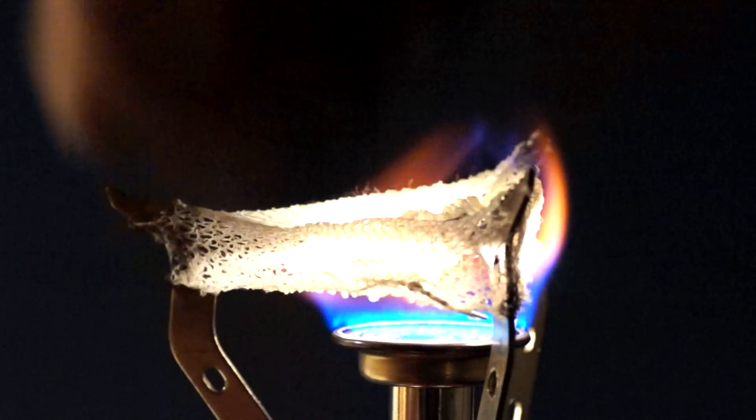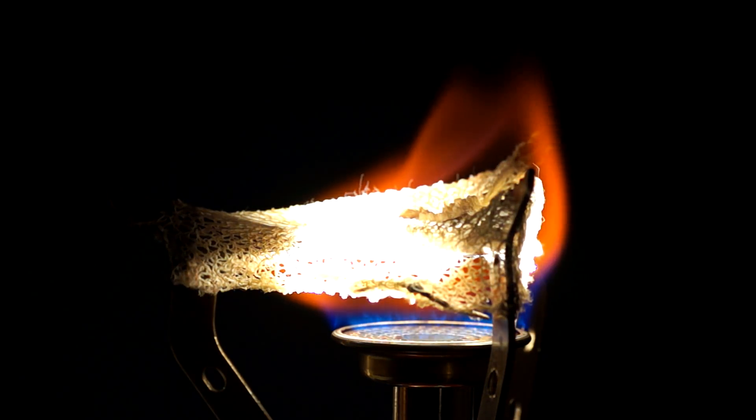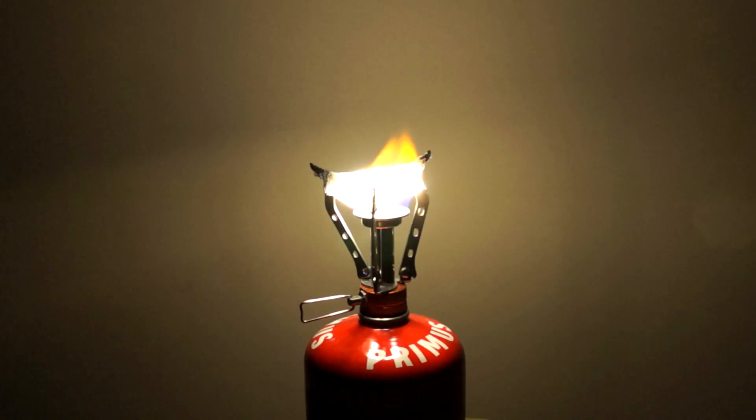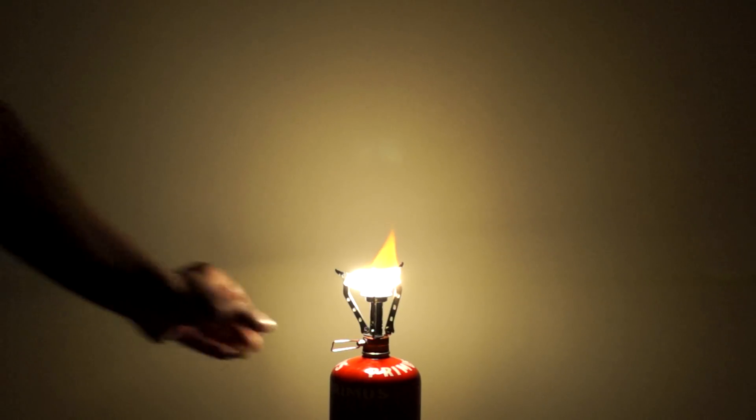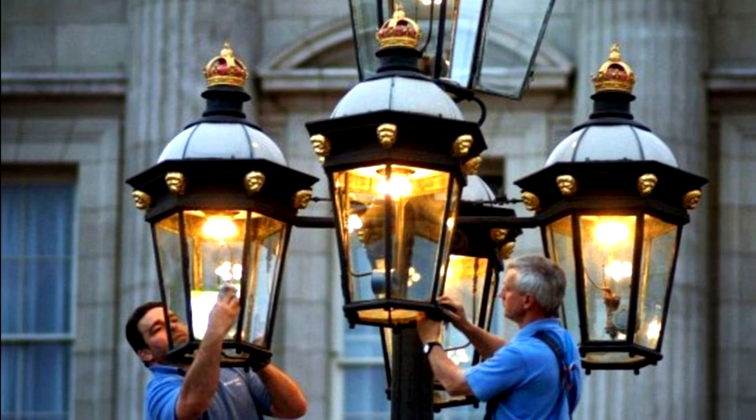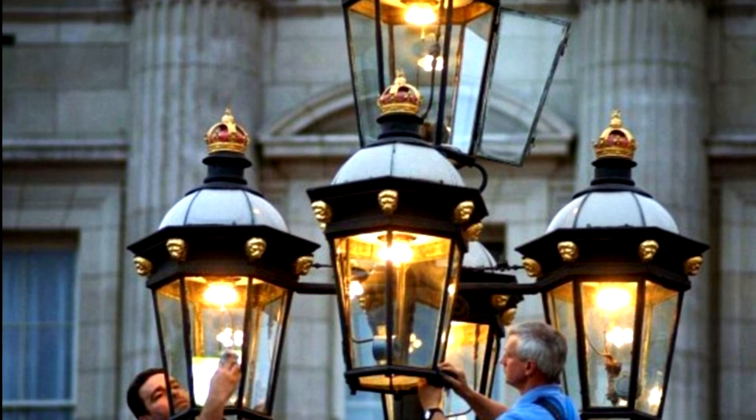Also when heated up, yttrium oxide glows very brightly as a result of candleluminescence, or in simple words, it converts heat energy into light energy. This property was used to produce gas mantles for gas lamps, which were widely used for lighting the streets and for camping.